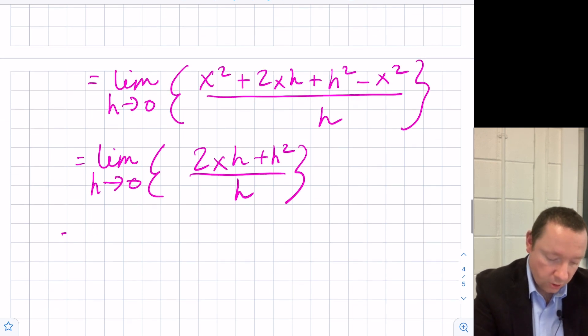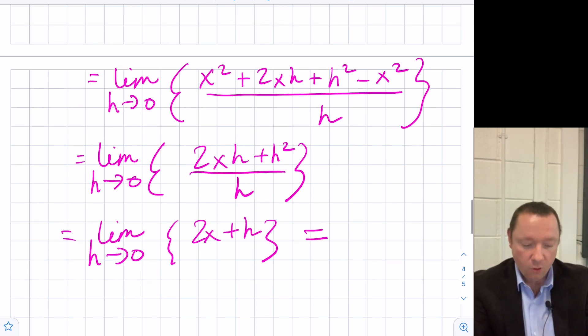which is the limit as h goes to zero. Dividing through by h, then we get 2x plus h. So as h goes to zero though, that means we'll have 2x plus nothing, which is just equal to 2x.